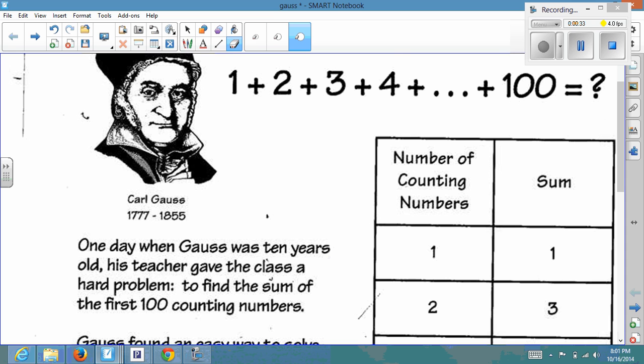His teacher posed this problem, and they had to add 1 plus 2 plus 3 plus 4 plus 5, all the way up to 100. And Gauss got done with the problem really quickly.